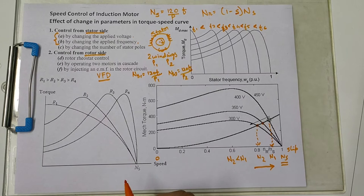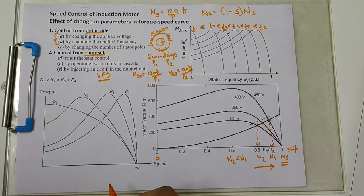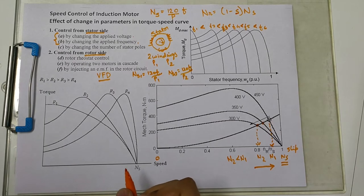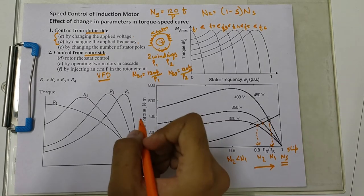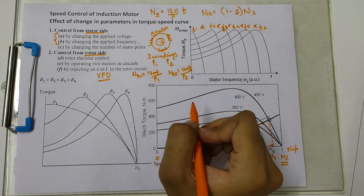Now we can also do such a thing that when we combine both windings, where we give supply to both the windings, then in that case we can have a different combined number of poles, for which we will have a third speed.